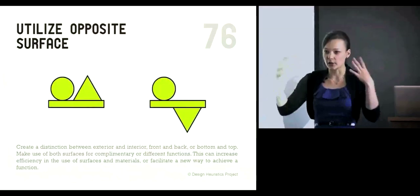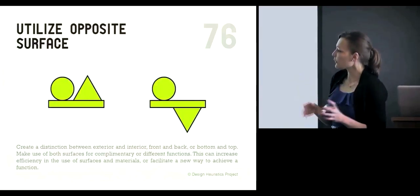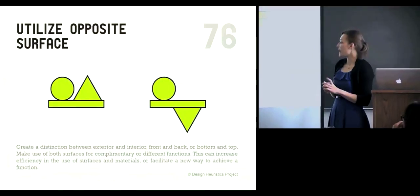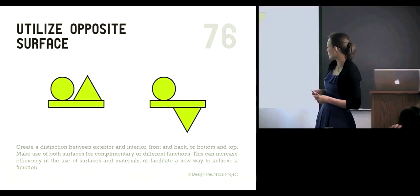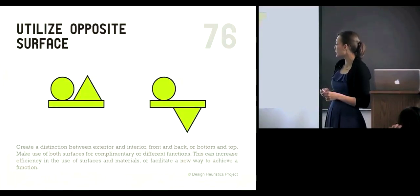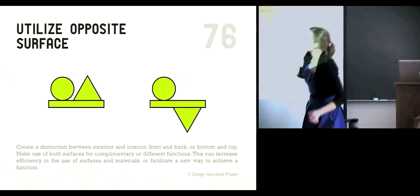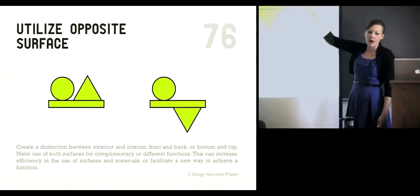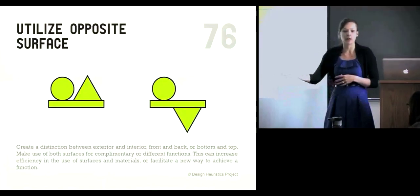Together we're going to talk about how to utilize an opposite surface. The card prompt reads: 'Create a distinction between the exterior and interior, front and back, or bottom and top. Make use of both surfaces for complementary or different functions. This can increase efficiency in the use of surfaces and materials, or facilitate a new way to achieve a function.' So what I want you to do is think about a regular chair and think about how you could utilize an opposite surface of it to make it different — it can still be a chair, but maybe it's got another feature.